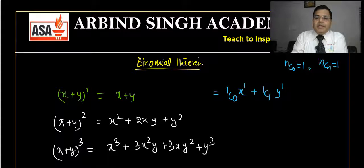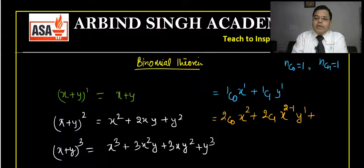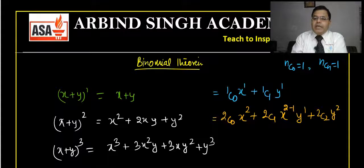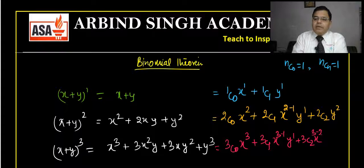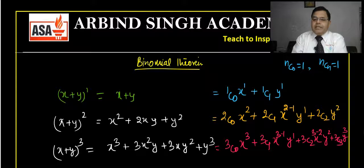Similarly, x plus y whole square can be written as 2C0 x squared plus 2C1 xy plus 2C2 y squared. Here 2C0 is 1, 2C1 is 2, and nC1 is n. For x plus y whole cube, we can write 3C0 x cubed plus 3C1 x squared y plus 3C2 xy squared plus 3C3 y cubed. So 3C1 is 3, 3C2 is 3, 3C0 is 1, and 3C3 is 1.